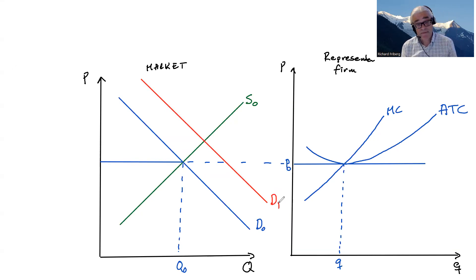What happens? Well, supply will meet in response to this. So we'll have supply at Q1. We have a price P1.